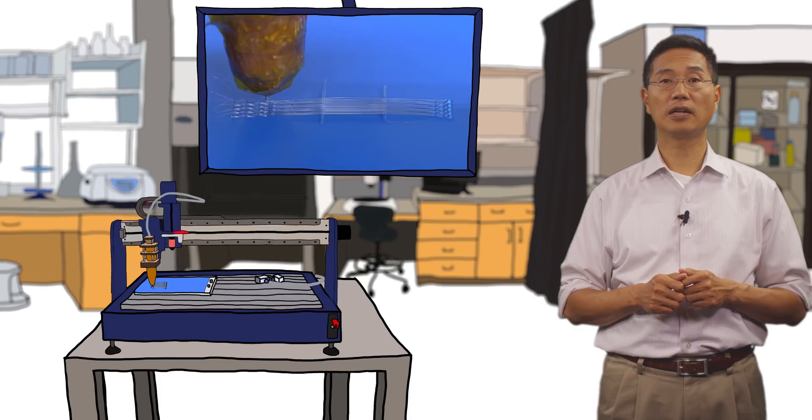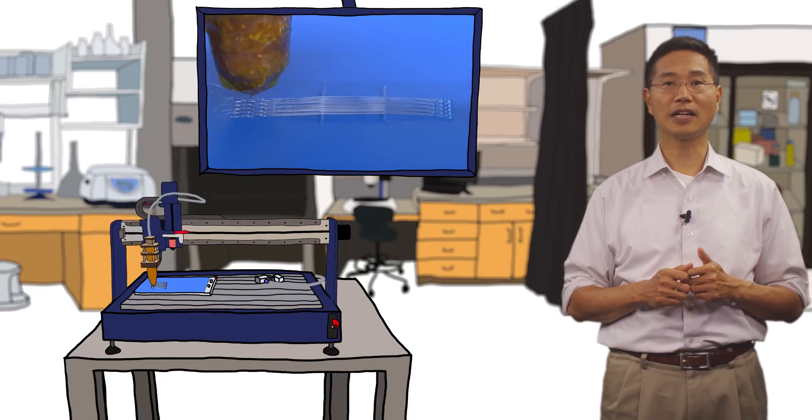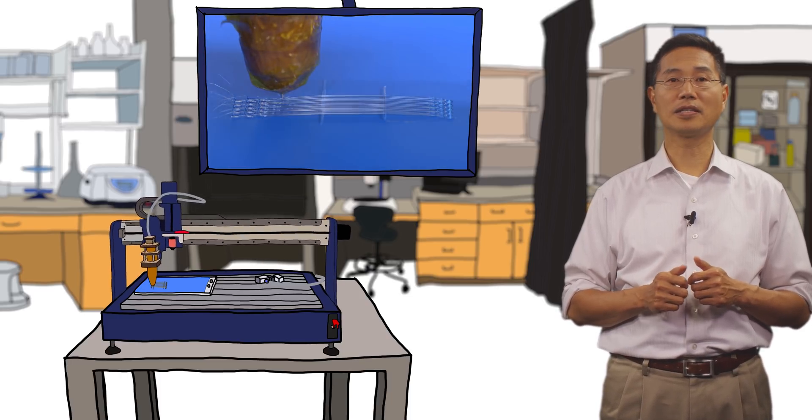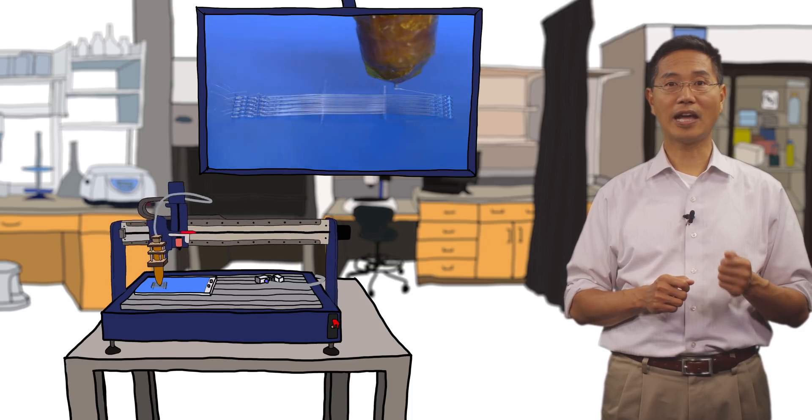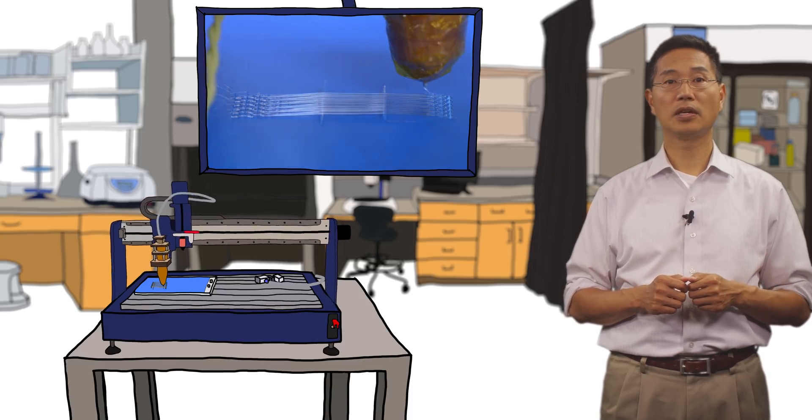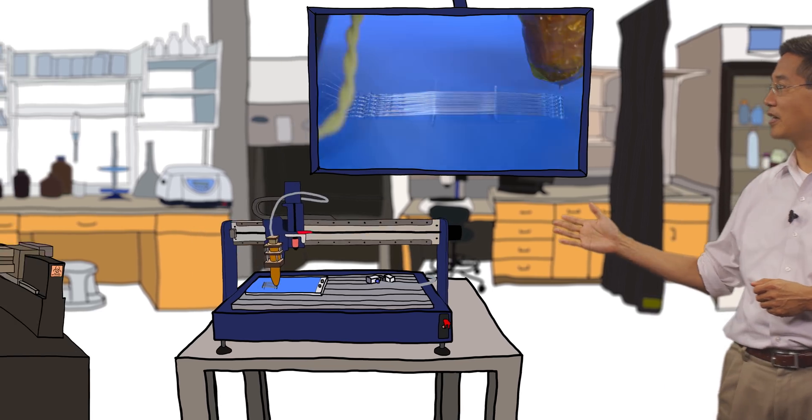These advances will occur in tandem with the development of printing technologies needed to build organs to scale, which starts with organizing the vasculature, scaffolding, and cell types, which is an area that Jennifer Lewis has spearheaded.